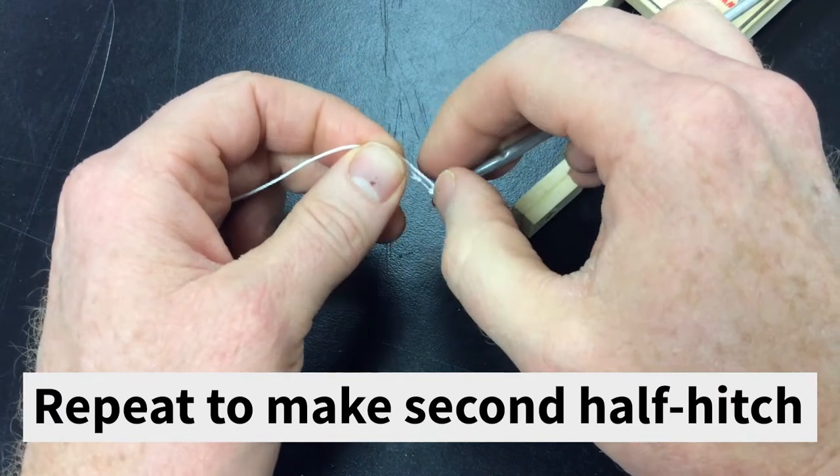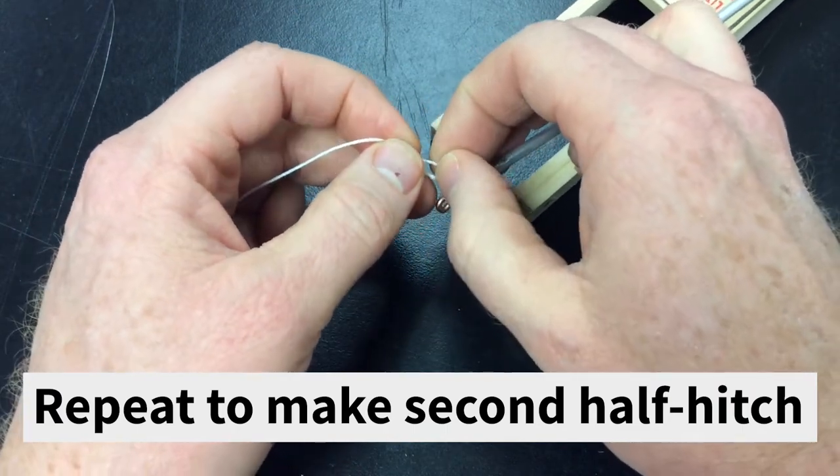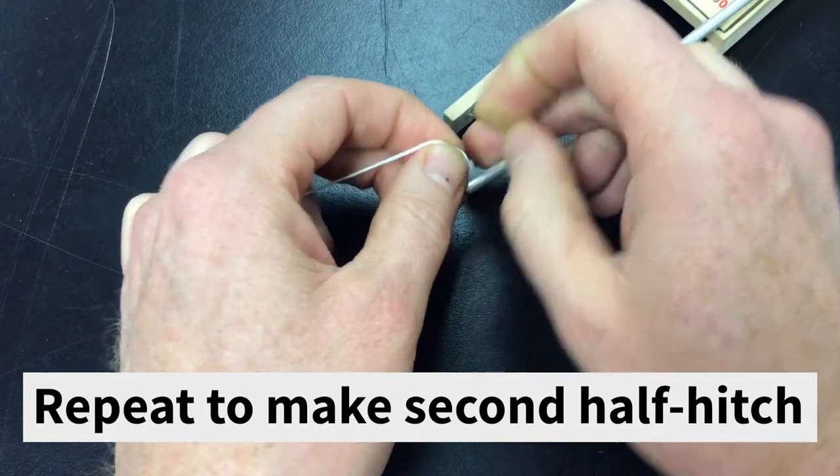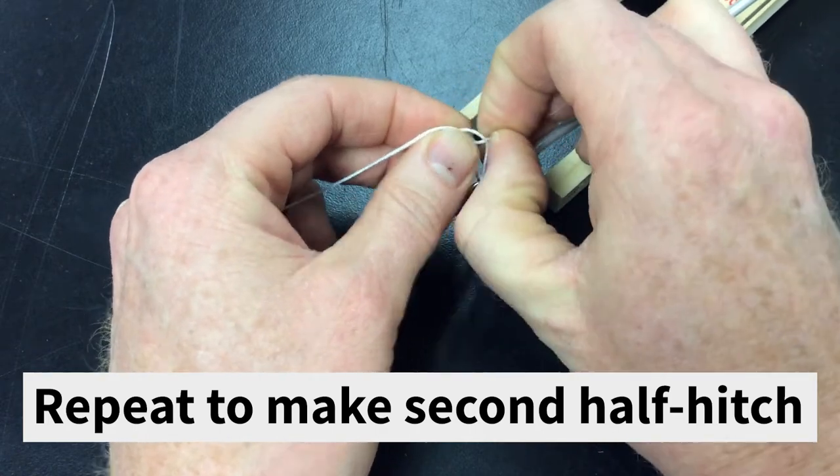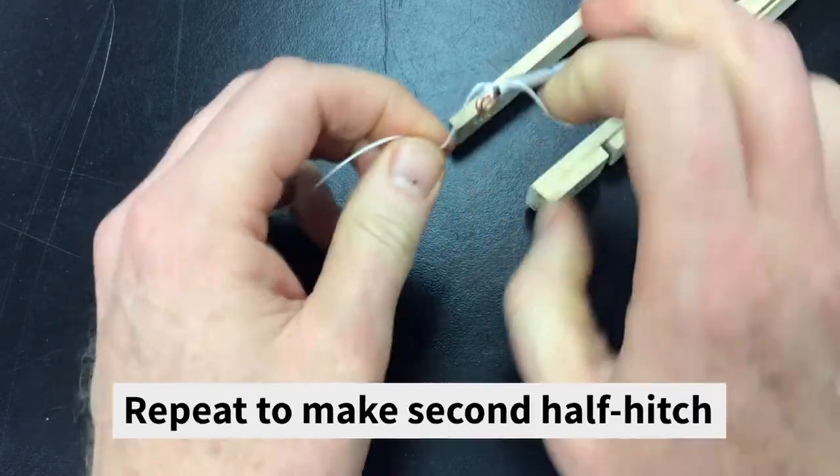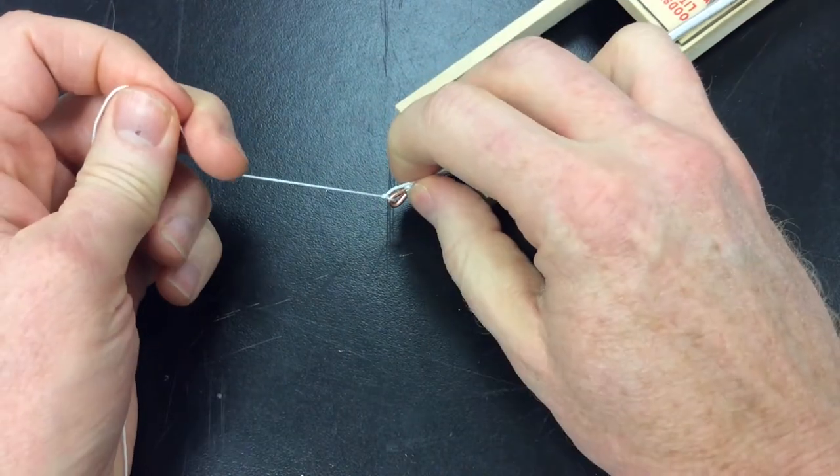Now if you are familiar with the fisherman's knot, that would be an excellent way to make this attachment also. But I find these two half hitches work really just fine.